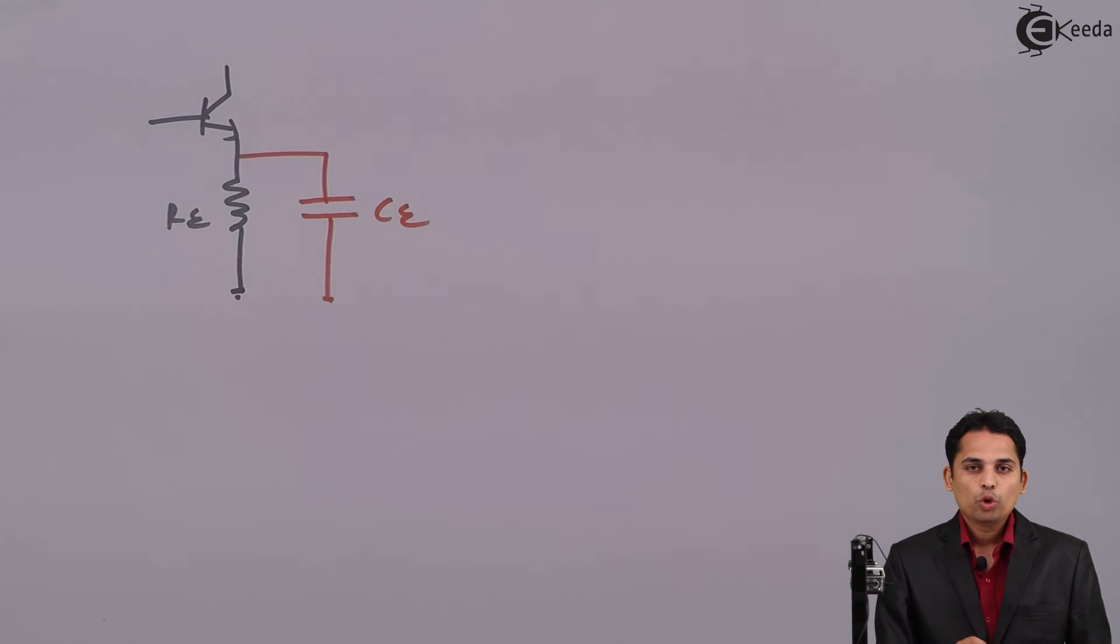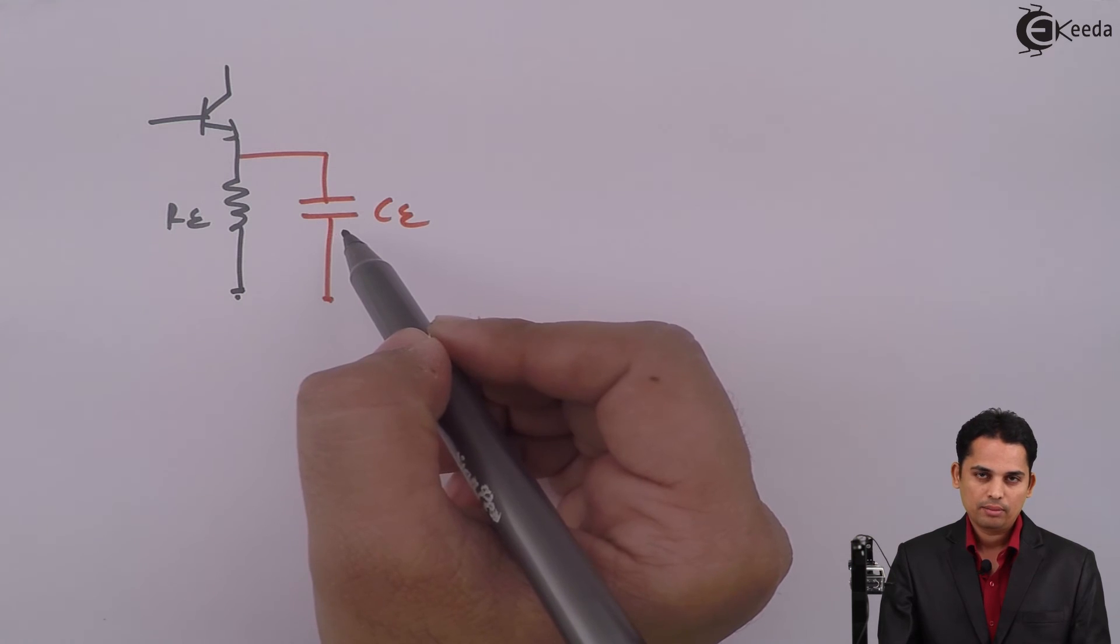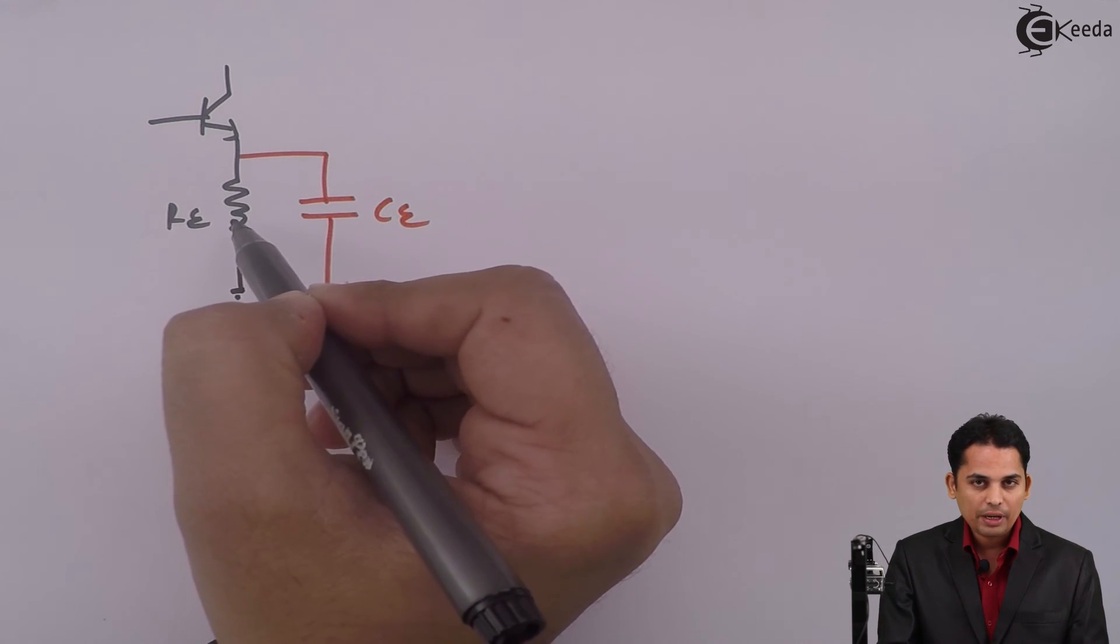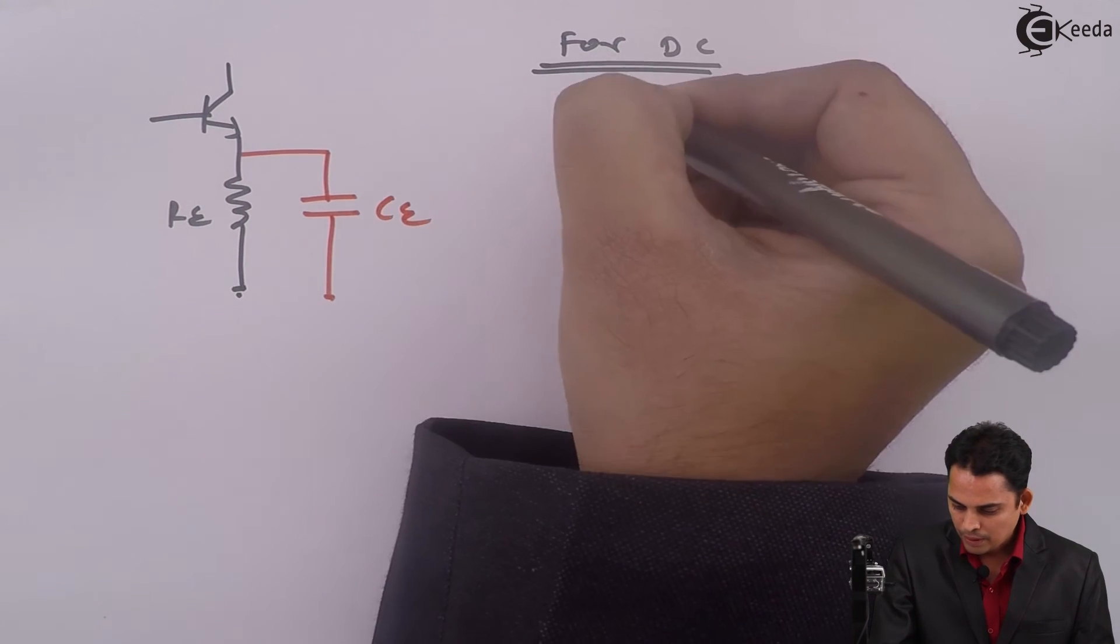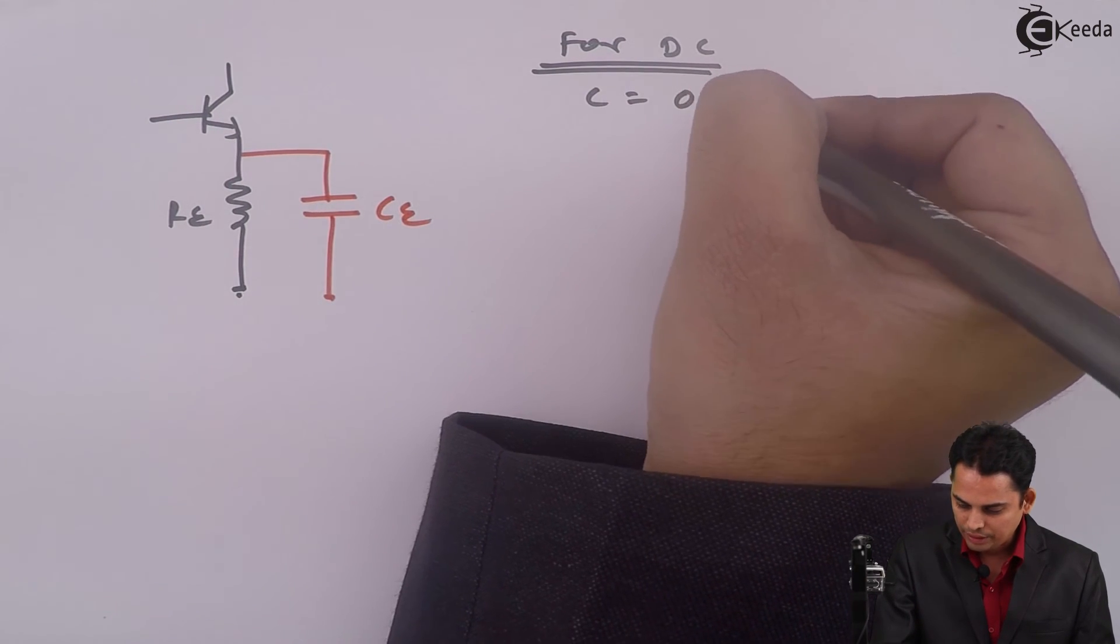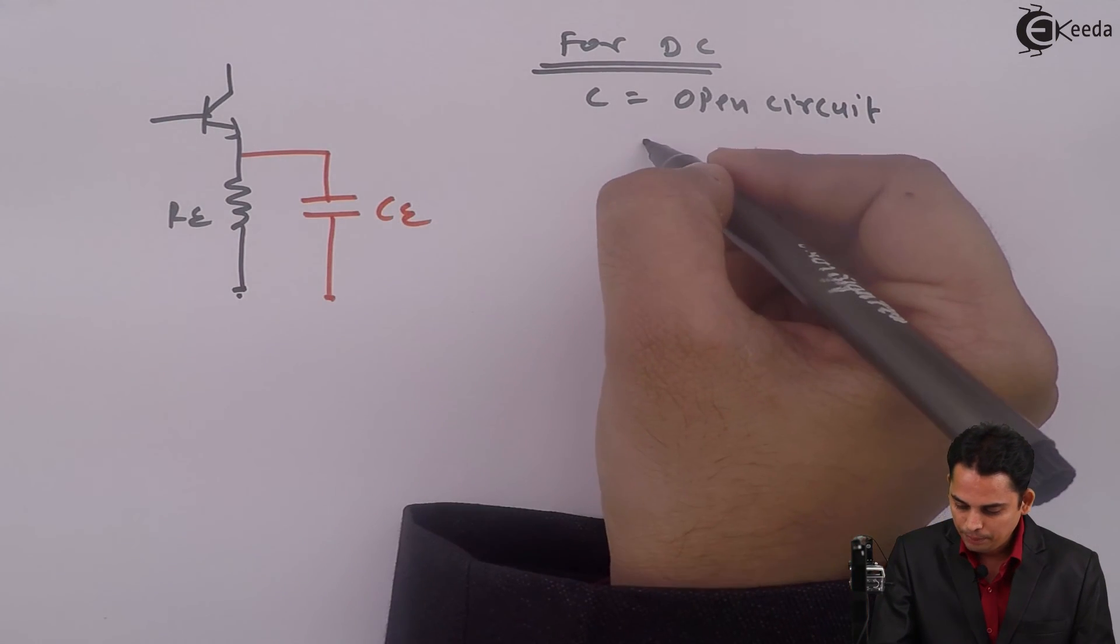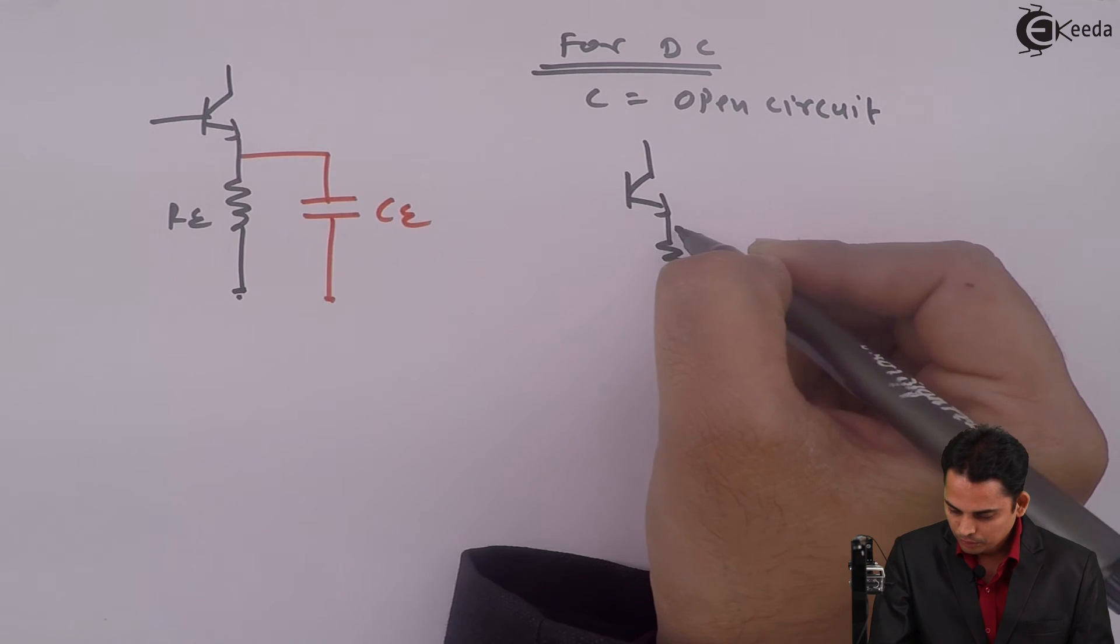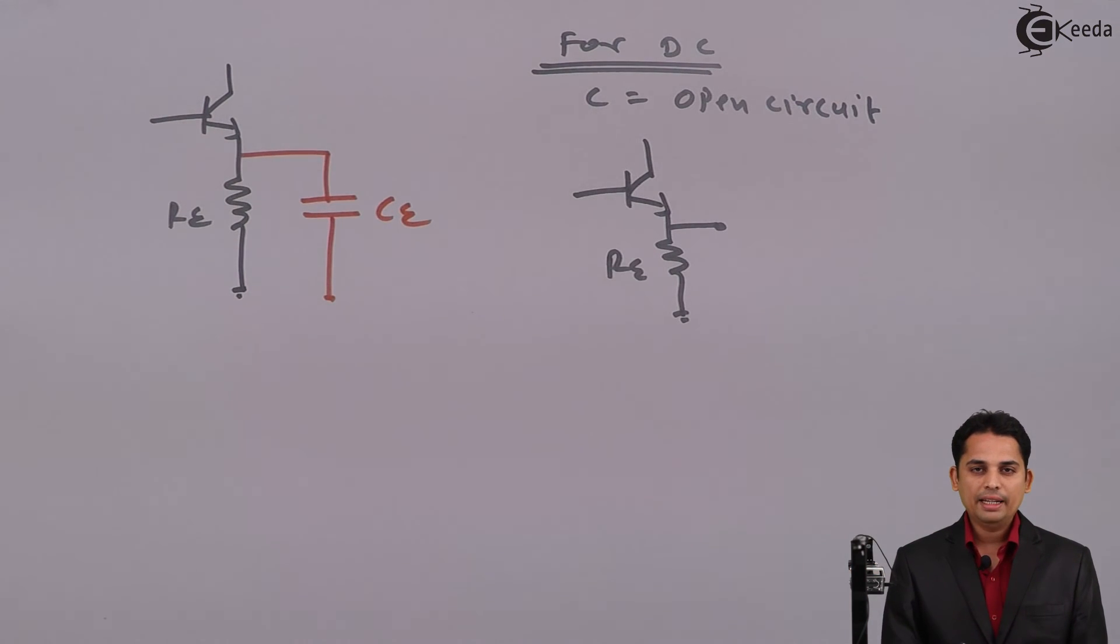The name of capacitor is CE. Now, during DC analysis, capacitor will be open circuited and hence RE will be available. For DC, capacitor is open circuit. Hence, the circuit diagram will become, means RE is present during DC analysis.